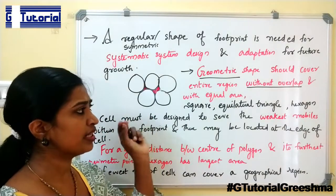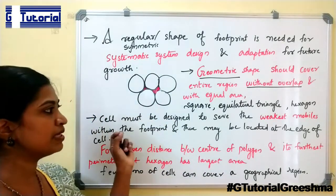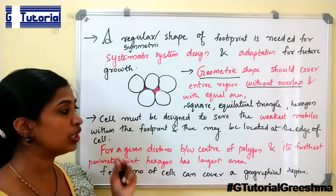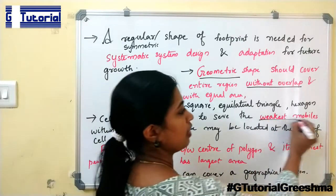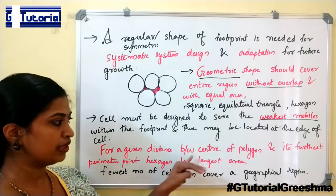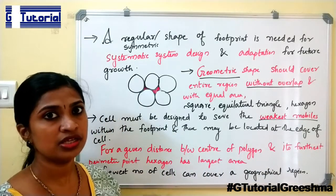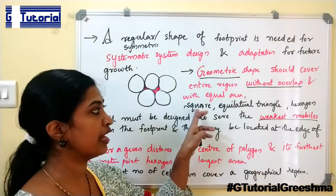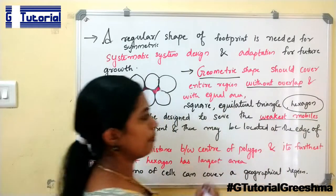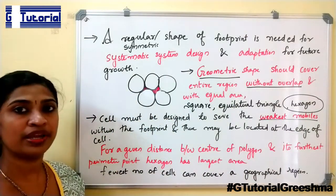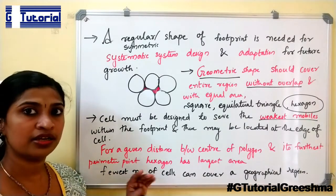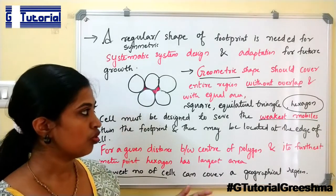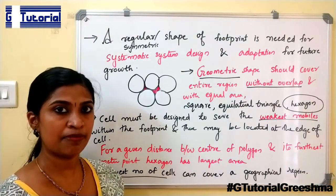The cell must be designed to serve even the weakest mobile within its footprint, including mobiles located at the edge of the cell. For a given distance between the center of a polygon and its farthest point, a hexagon has the largest area. So we choose a hexagon to represent the cell, as it also requires the fewest number of cells to cover a given area. In practice, cellular systems use a hexagonal shape for cells.